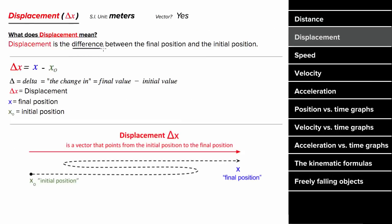What does displacement mean? In physics, displacement is the difference in position. So if an object went forward, then backward, then forward again, the displacement could be represented with an arrow that points from the initial position all the way to the final position. That's why a formula for displacement can be thought of as the final position minus the initial position.